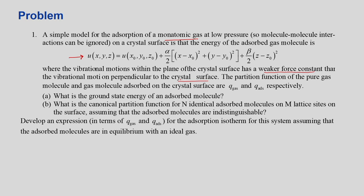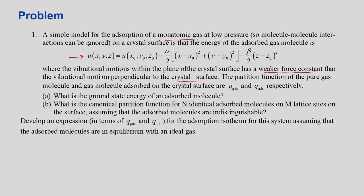What does this mean? It means the force constants along the horizontal direction are very small, so you can assume that the atoms near that particular central atom are stationary. What is happening is the perpendicular vibration. Based on this statement, it follows the Einstein model. It says it has a weaker force constant than the vibrational motion perpendicular to the surface. When it goes to the perpendicular direction, it means it is vibrating across this direction rather than this direction.